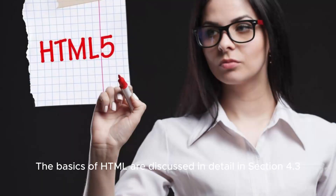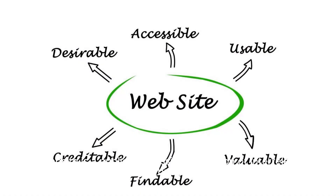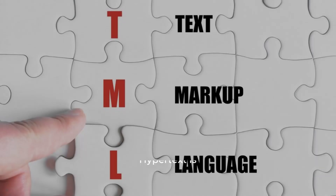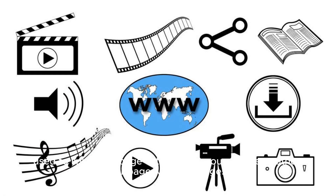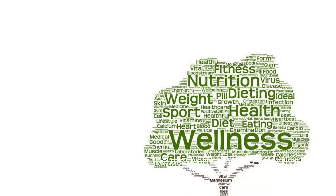The basics of HTML are discussed in detail in section 4.3. A website is a publicly accessible collection of interrelated webpages. Hypertext is used to link a webpage with other resources like another webpage, videos, images, and the like.